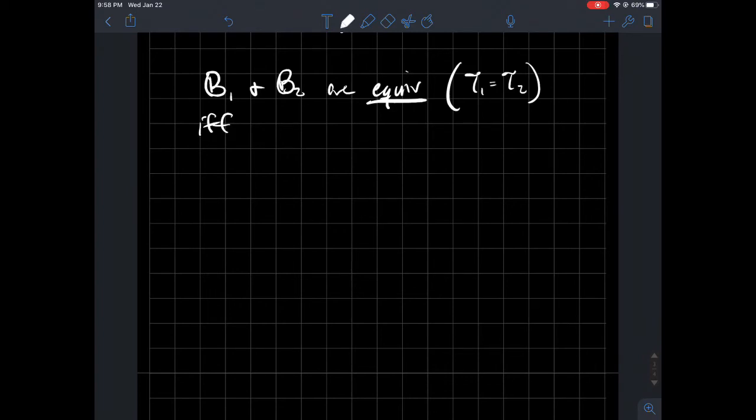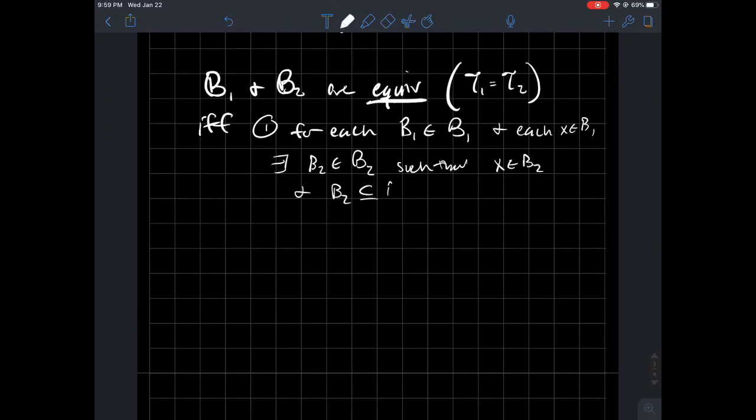If and only if, I'll number these two. So (1) for each element of your first basis B₁, so for each B₁ in fancy B₁, and for each X that lives in there, so for each X in B₁, you should be able to find, so there exists, a B₂ that came from your other basis, fancy B₂, such that, and you might already know what to do, X should be in this one, so such that X lives in B₂, but then also B₂ should be entirely contained in B₁.